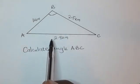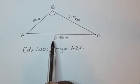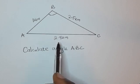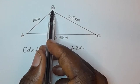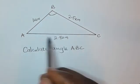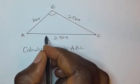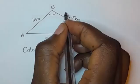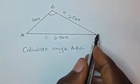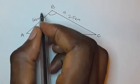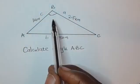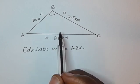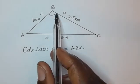So we use the cosine rule. Here, capital letter B is the vertex, and on the opposite side you write small letter b. This side is A with small letter a, and this side is C with small letter c.